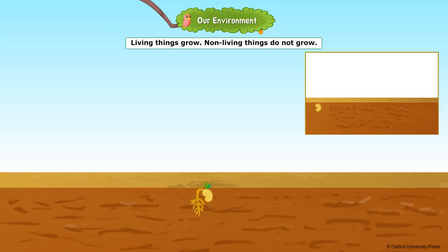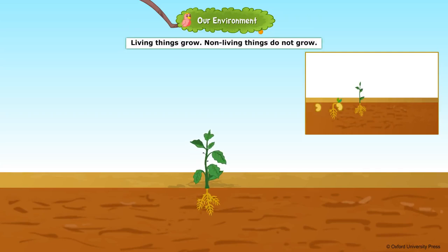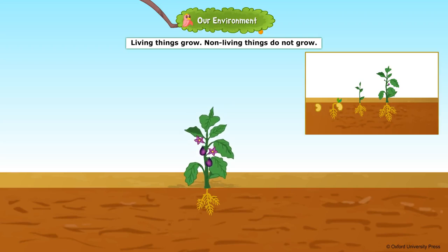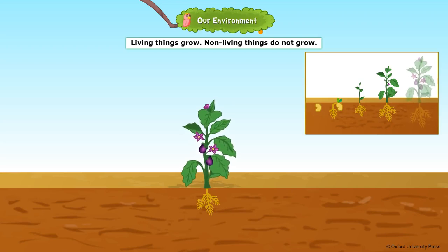Living things grow. Babies grow into adults. Small plants grow into big trees and so on. But non-living things do not grow.